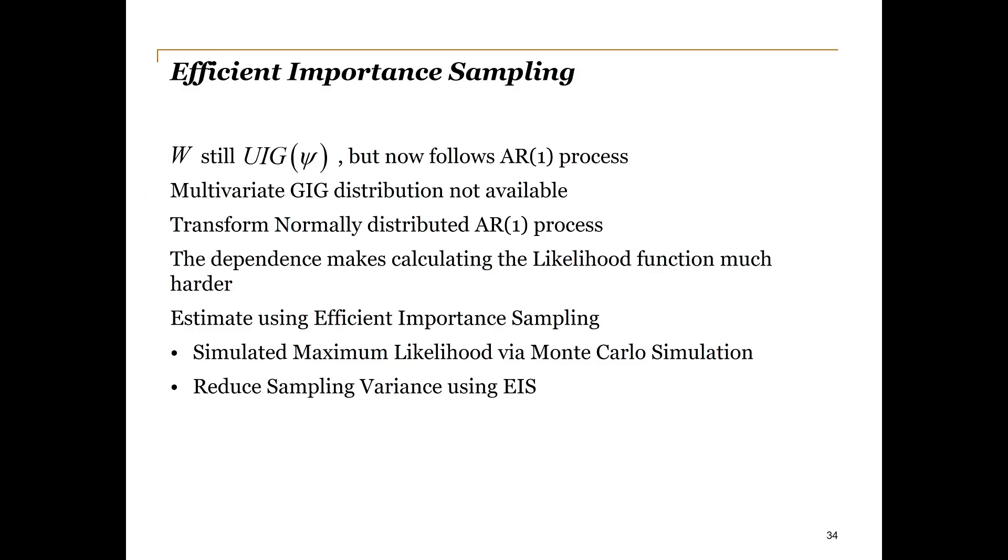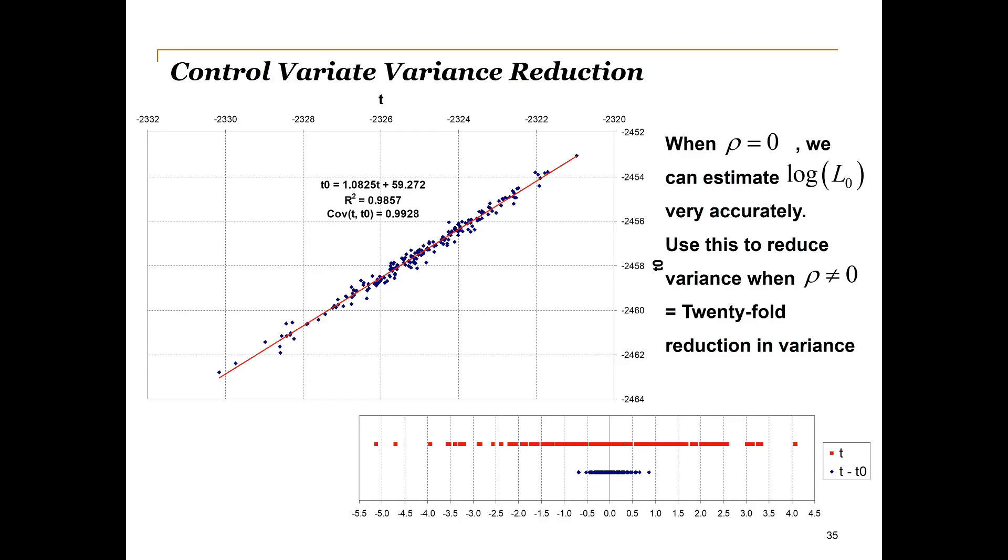We therefore employ efficient importance sampling to transform normally distributed variables with first order autocorrelation into the required inverse Gaussian variables. To this, we add the control variant variance reduction technique. We use the relationship between the efficient importance sampling estimate when rho equals zero and the normal maximum likelihood estimate excluding time dependence to reduce the volatility of the estimate when rho does not equal zero. In this way, we achieve an almost 20-fold reduction in the variance of the estimates.